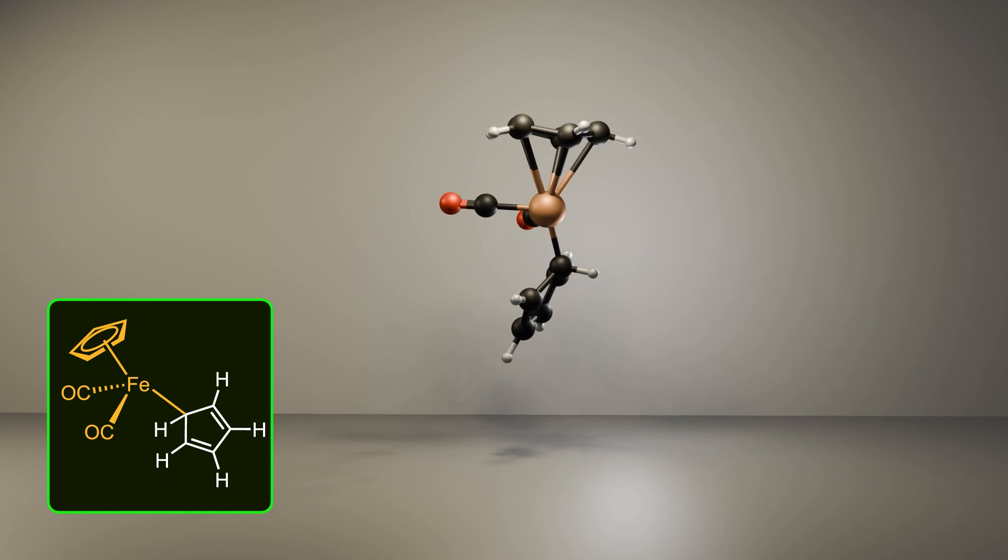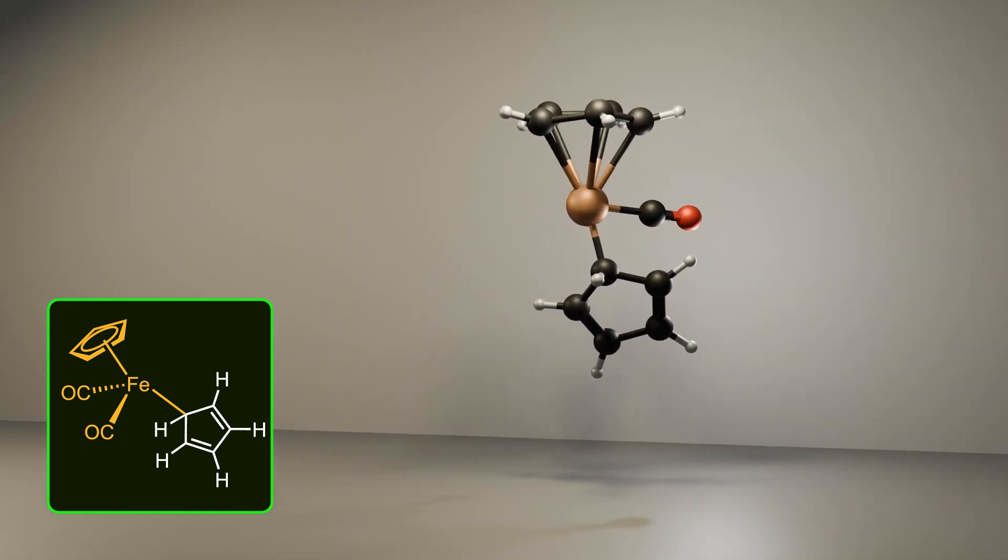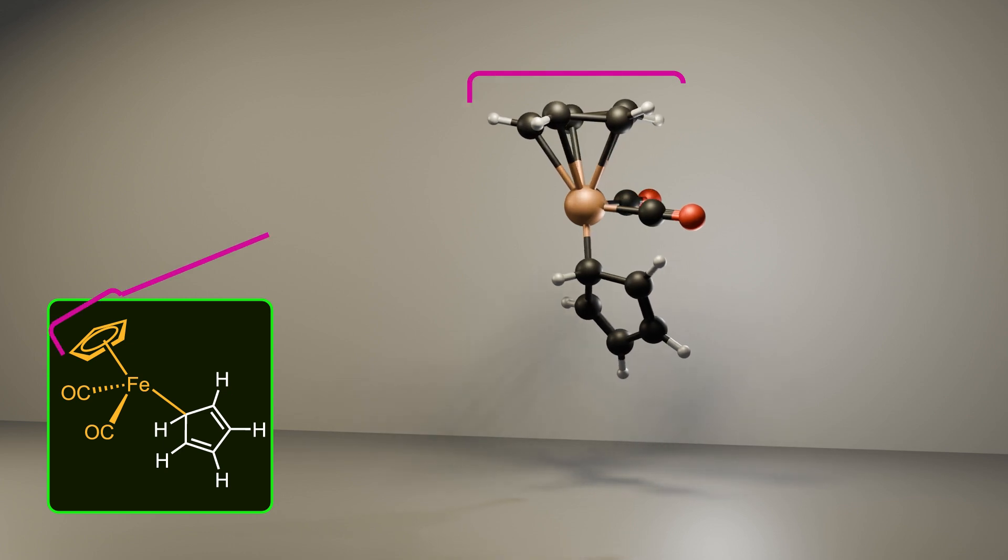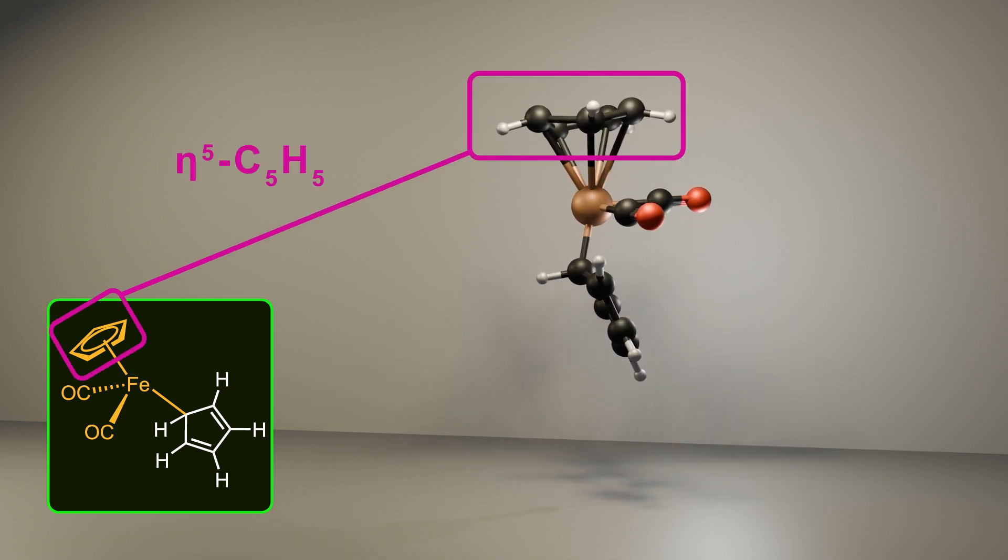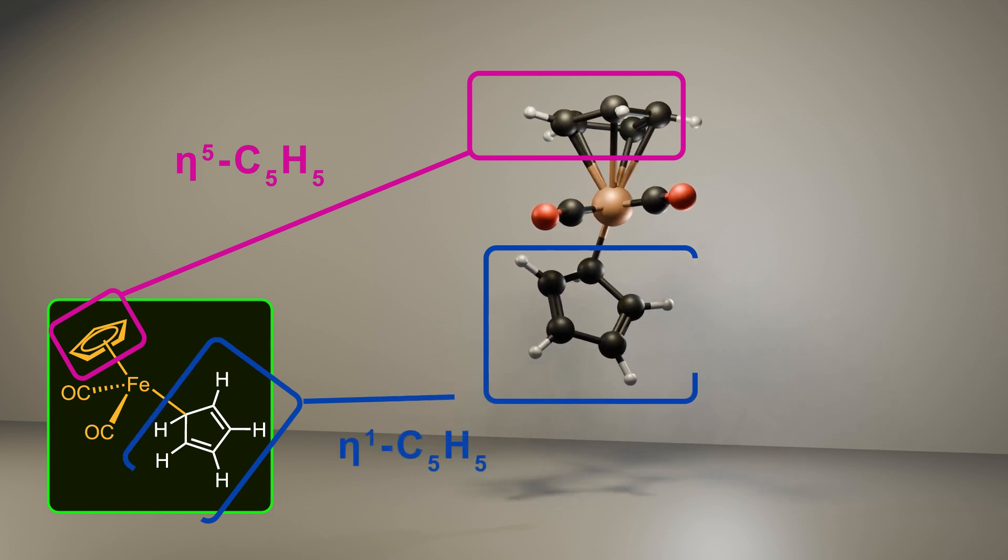Organometallic compounds also show astonishing fluxional behavior. For example, take a look at this iron complex where one of the cyclopentadienyl rings binds to the metal as a pentahapto ligand and the other is attached via a sigma bond to the metal center.